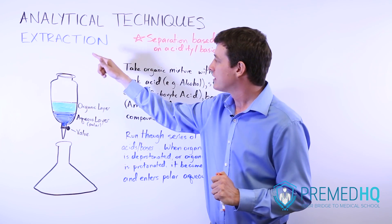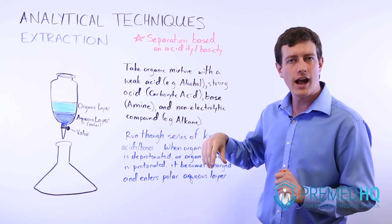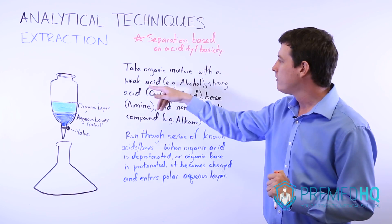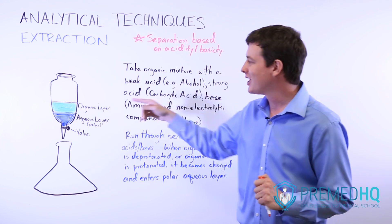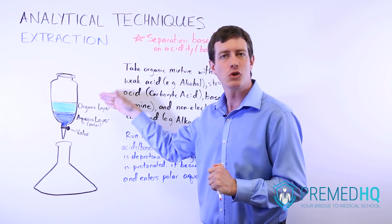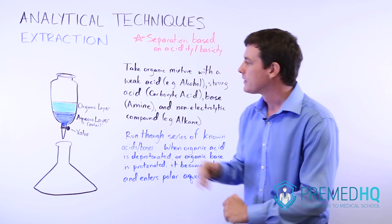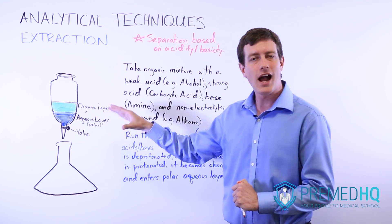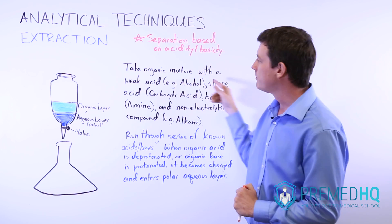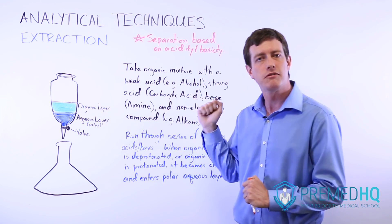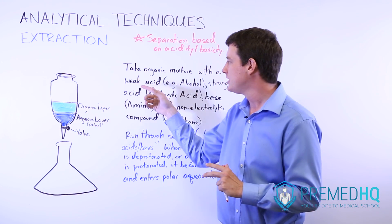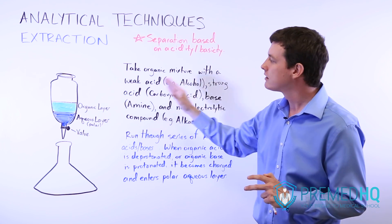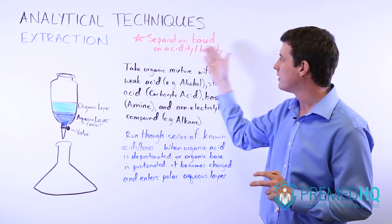The whole idea with extraction is that by running through a series of weak or strong acids and bases, you're selectively protonating or deprotonating one of your organic compounds. As soon as that happens it takes on a charge and moves away from the organic layer — the uncharged hydrocarbon-like material — and into the polar aqueous layer. Every time you move one of these organic compounds into the aqueous layer, you'll want to remove it so that you have a fairly pure aqueous sample containing the extracted compound.